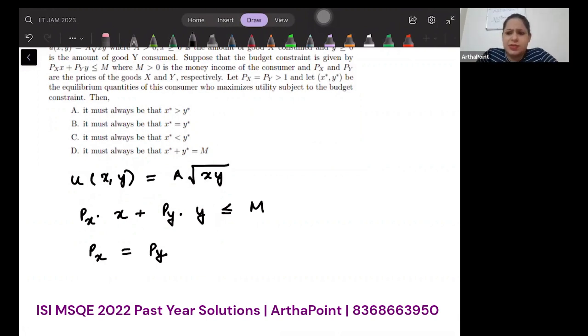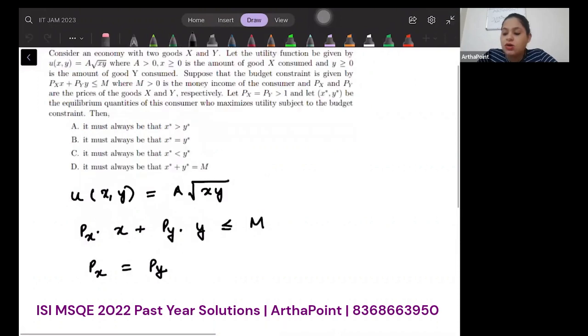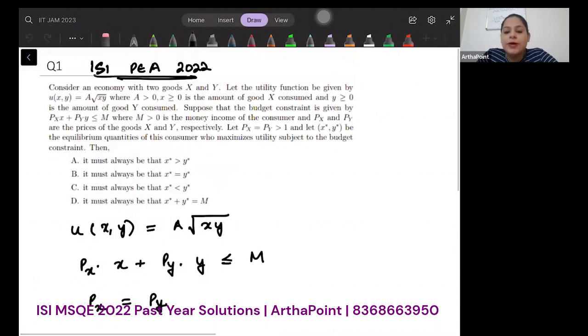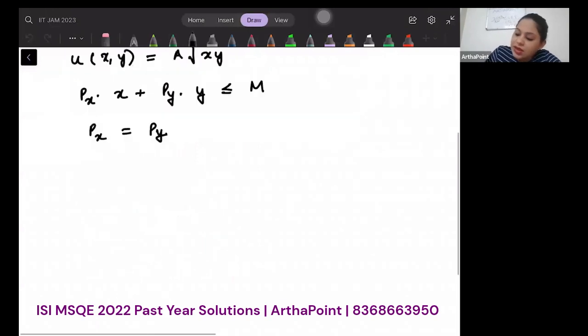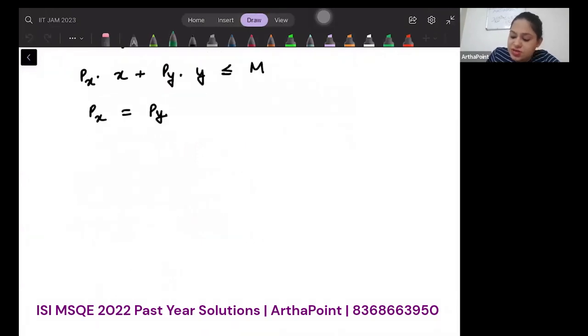But when we talk about Cobb-Douglas preferences, we have learned something. If my Cobb-Douglas preference is just xy or √(xy), whatever. So let's take even a general one: x^α · y^β.